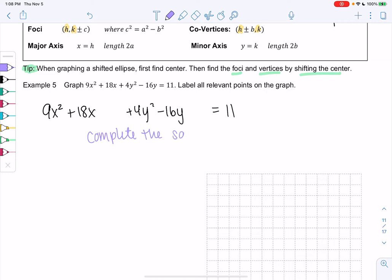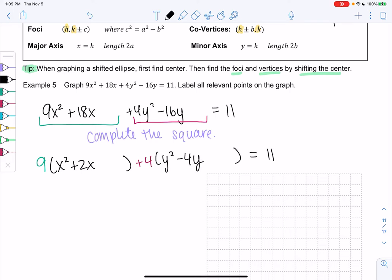So we'll start by completing the square. This will be a good review. When we have coefficients, we have to factor those coefficients out. So for the x's, we're going to do the x's and the y's separately. For the x's, I'm going to factor out 9. And then we get x squared plus 2x, and I'm going to leave space to complete the square. For the y's, we're going to factor out 4 because we just want a single y squared. So plus 4, y squared minus 4y, and I'll leave some space again to complete the square. Equals 11.